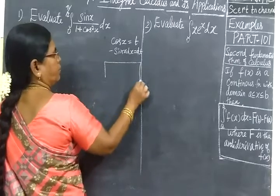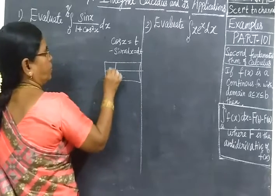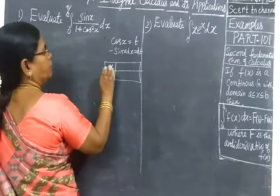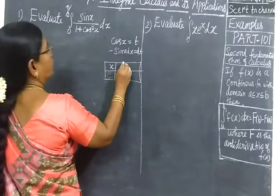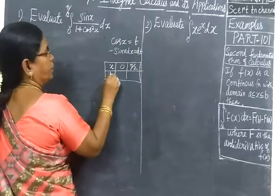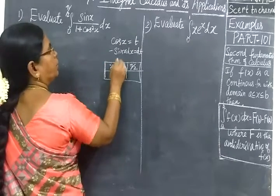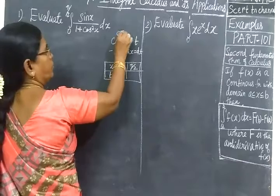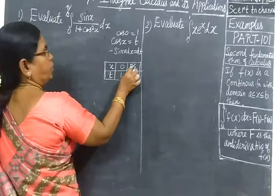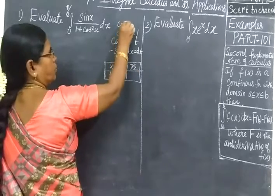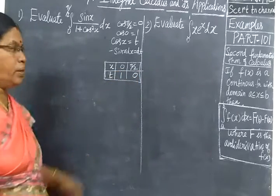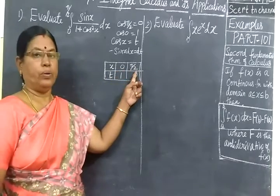The limits will also change. When x equals 0, cos 0 equals 1, so the lower limit becomes 1. Next, substituting cos(π/2): cos(π/2) equals 0, so the upper limit becomes 0. So when x goes from 0 to π/2, t goes from 1 to 0.